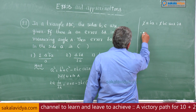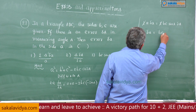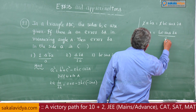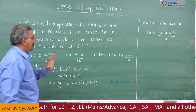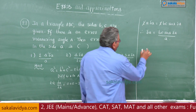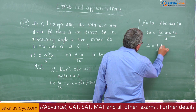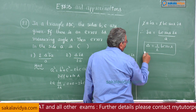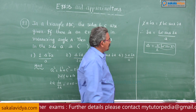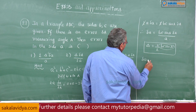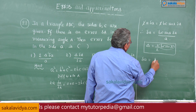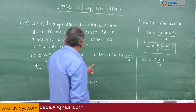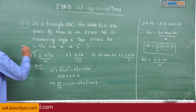We need to find δa = bc sin A · δA / a. Checking the options — this form is not directly listed. But we know that the area delta = (1/2) bc sin A from the previous problem, so bc sin A = 2Δ. Therefore δa = 2Δ · δA / a. This matches the first option.